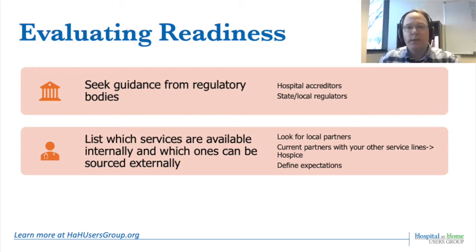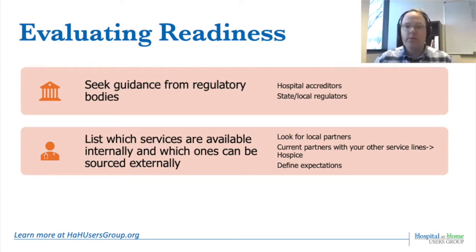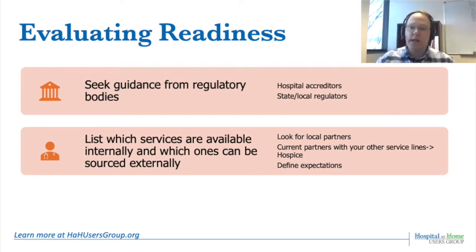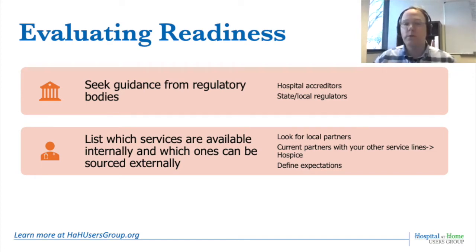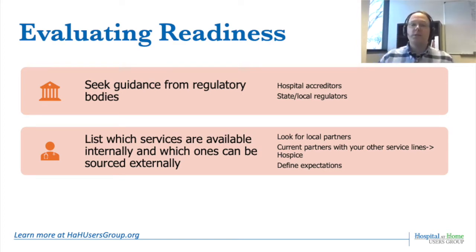As we developed our acute hospital care at home service line, we sought input early from local and state regulators and hospital accreditors. Not only did this allow them to be involved early, it helped ease concerns of hospital leadership. Even though we had an ambulatory hospital-to-home model with ancillary providers, we paused and re-evaluated whether our ambulatory partners could meet the needs of this new waiver. For those just starting, a helpful tip is to look for partners with other service lines such as hospice or home care — for example, who provides infusion services for your home care partner?